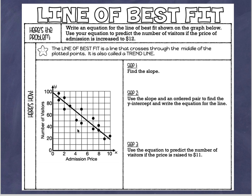Let's look at our graph. We've got our x variable across the bottom — the admission price — and going up the side is the number of visitors. This is some sort of admission price, whether it's to a museum, concert, or amusement park, and we're looking at the number of visitors based on that price. The first thing I notice is that my points are generally going downward, so I'm seeing a negative correlation here.